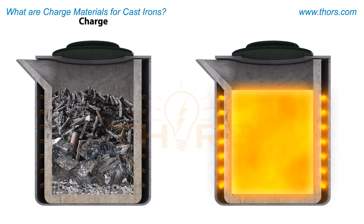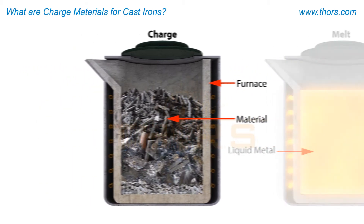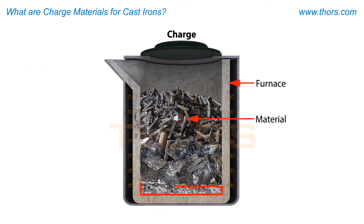The term charge refers to the material put into a furnace for melting in a foundry. The term melt is often used to describe the metal in molten liquid form. Charge material consists of the various metals and additions that are melted to create a specific grade of metal or alloy.